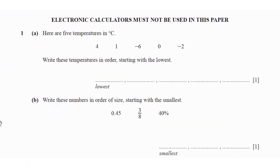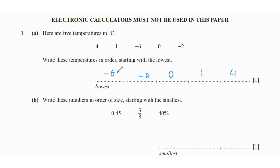Question one says you have five temperatures in degrees Celsius. Write these temperatures in order starting with the lowest. So the lowest will always be the negative number — but the bigger negative number. So negative six is the lowest, then we have negative two, then we have zero, then we have one, and then we have four. So always remember the highest negative number is the lowest in value, and the smallest negative number will be greater in value compared to the other negative number.